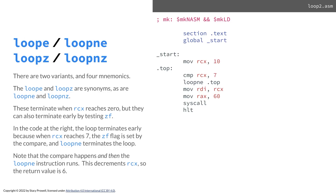If I'm using LOOPE in place of loop, I'm still going to count RCX down to zero. But they can also terminate early by testing the zero flag. For example, with LOOPZ: if RCX is one, I decrement it — now it's zero, I check it for zero, it matches, I terminate. Or I decrement RCX and check the zero flag — if the zero flag is set, I terminate. So there are two different conditions under which the loop will terminate.